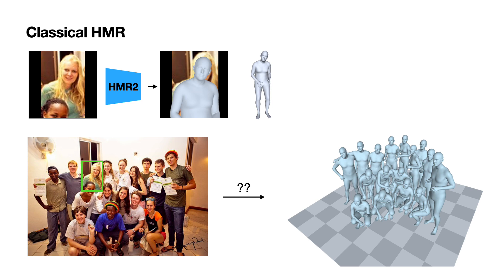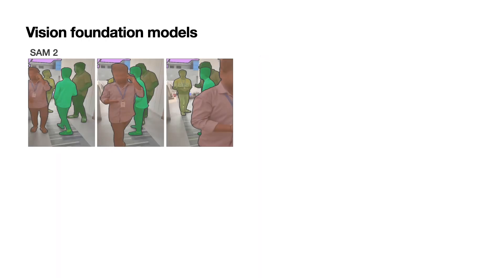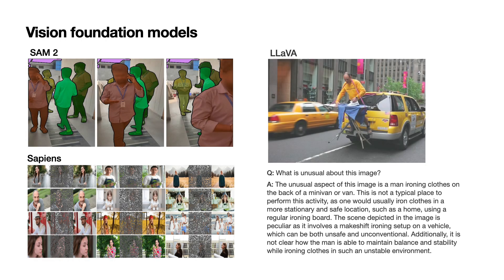Moreover, classical HMR models specialize in 3D human pose and shape, but understand very little about what people are doing. In contrast, today's multimodal foundation models have a deep semantic understanding of images, but don't have the 3D inference ability of an HMR model. The strengths of these two approaches should be combined to benefit each other.